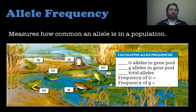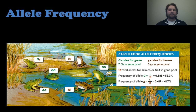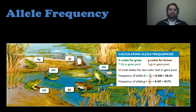Looking at this case with the frogs, we have capital G and lowercase g. Capital G represents green color, lowercase g represents brown color, and green is dominant to brown. If we count everything up, we see seven capital Gs and five lowercase gs in the gene pool — a total of 12 alleles. So the allele frequency of capital G is 7 out of 12, which is 58.3%, and the recessive allele is 5 out of 12, or 41.7%. It's as easy as doing part divided by whole.